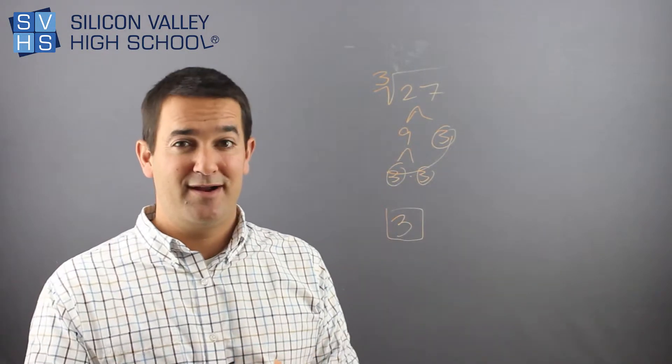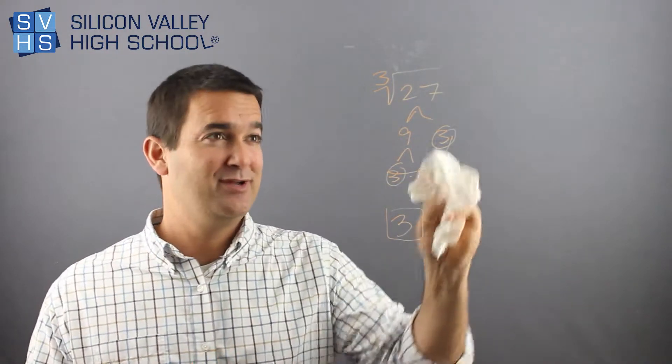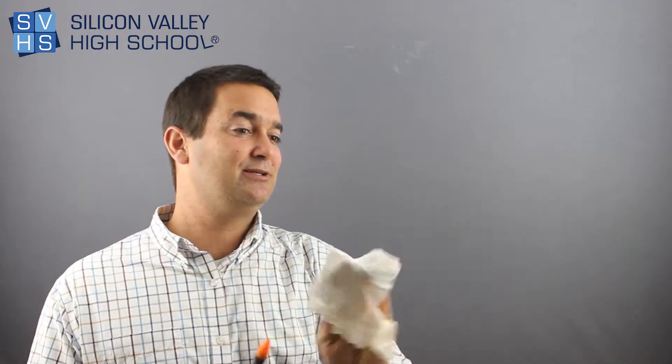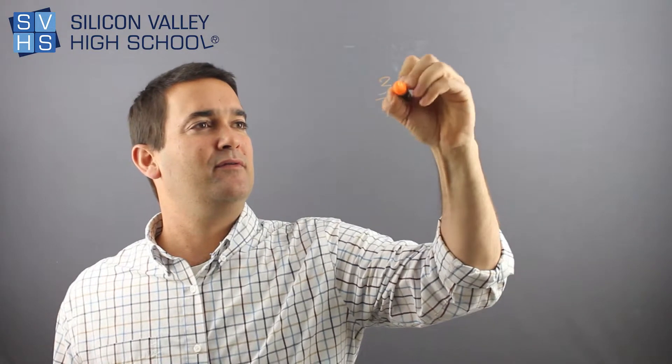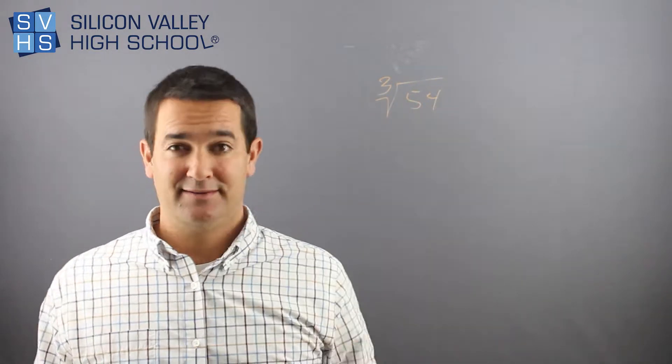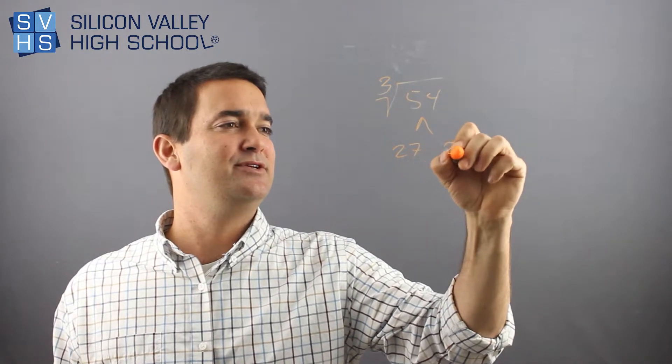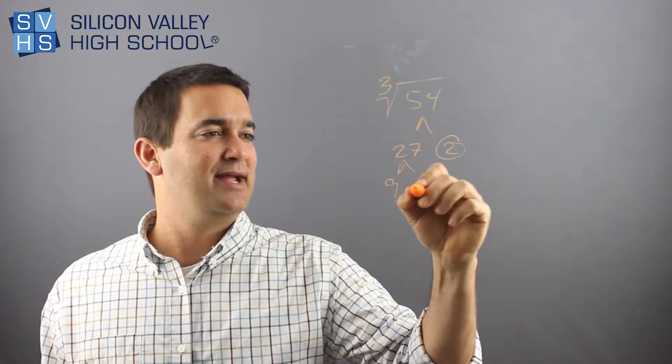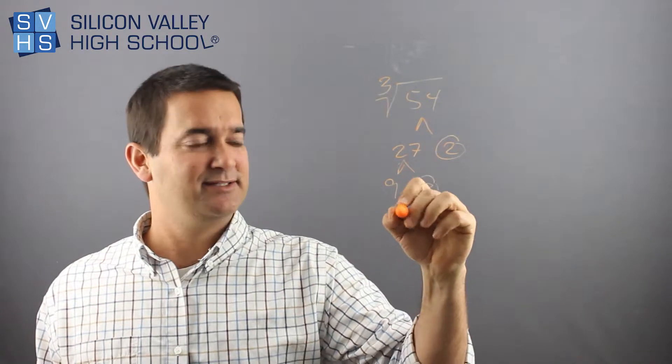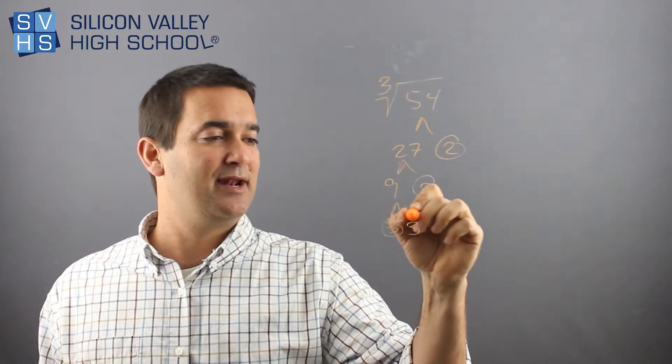So now I'll do one where I don't want to ruin the ending for you. But let's say I'm going to make someone still stuck in jail. Let's say I had the cube root of 54. In this case, I'm going to break it down. This is 27 and 2. That guy's there. This is 9 and 3. Circle my dead ends. This is 3 and 3. And I'm done.